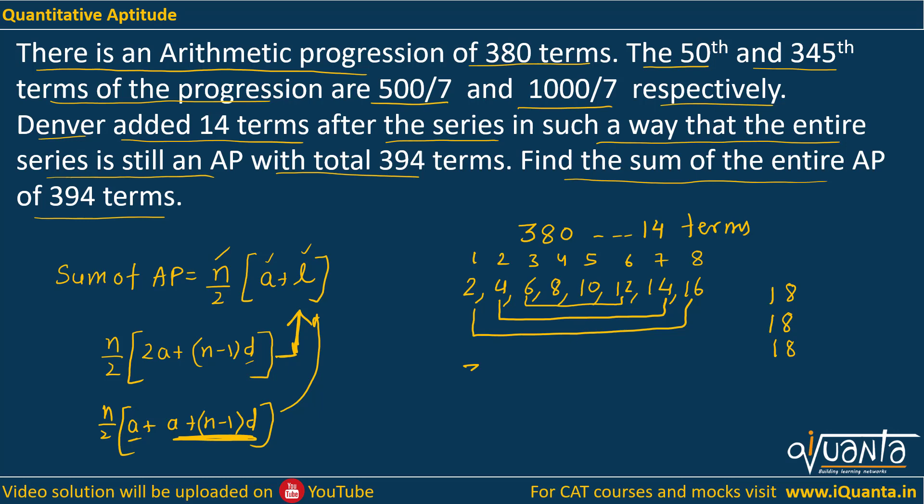So we will be using the same concept over here. What we have here is an AP of 394 terms now in which I have been given the 50th and the 345th term. So when we were doing this, we were seeing that sum of first term and the first term from the last is 18, then second term from the beginning and second term from the last is 18, third term from the beginning, third term from the last is 18.